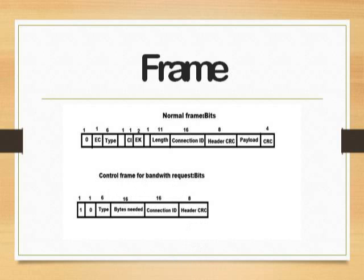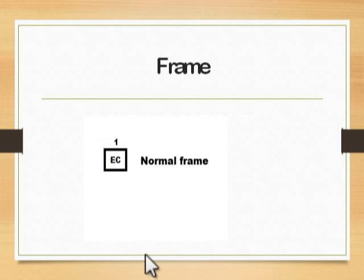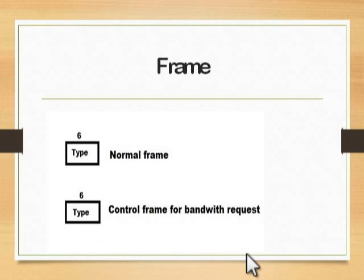Let us look at the normal frame. The normal frame is identified with 0 as the first bit value, while 1-0 as the first 2 bits identifies the control frame. The EPI bit indicates whether the frame is extended or not. The type field indicates the type of frame, which is divided into 3 bits and relates to fragmentation and data rates.